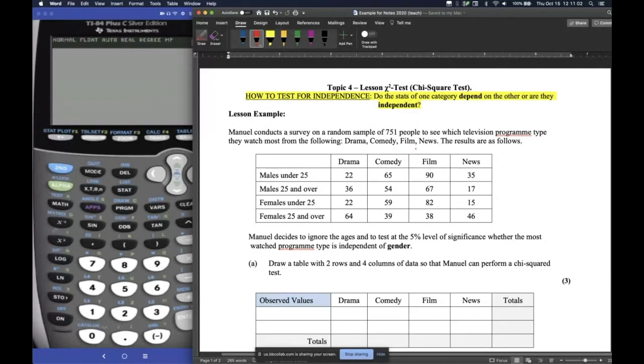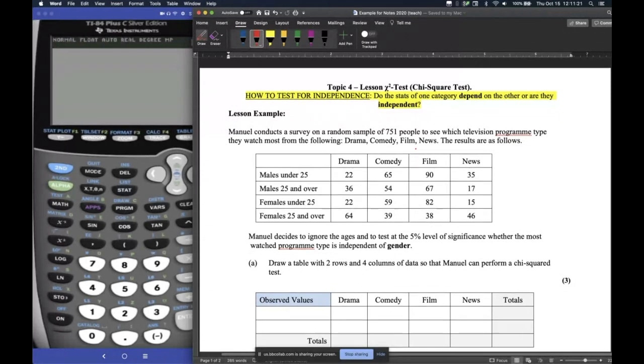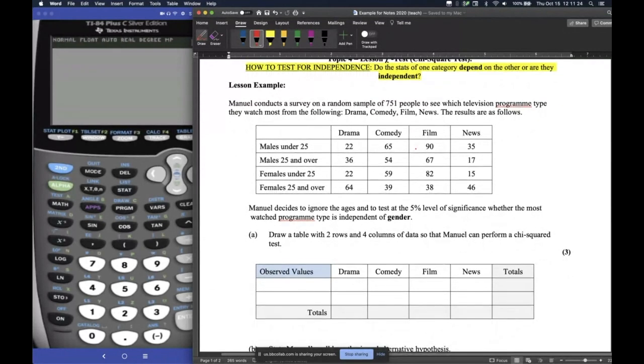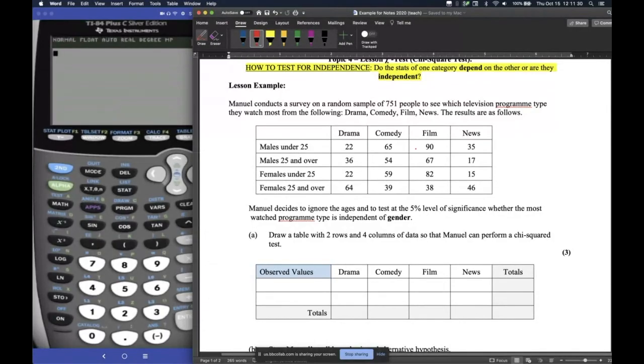Make sure you have this on your screen and just follow along with me. The example says Manuel conducts a survey on a random sample of 751 people to see which television program type they watch most from the following categories: Drama, comedy, film, and news. From Manuel's experiment or data collection, this is what he got. All these numbers, good numbers. And to do a chi-square test, we need to know the level of significance. He's going to test at a 5% level. This is always given to you, the level of significance. It's not something you have to find out.